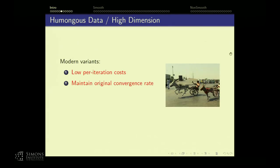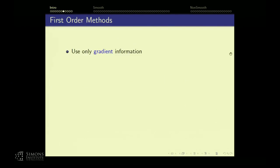You saw a bit of that in Rachel's talk yesterday, within the context of first-order algorithms. They're called first order because they use first-order information — which involves the gradient. It's not a completely clear definition, but if you're only looking at the gradient, you can call it first order.